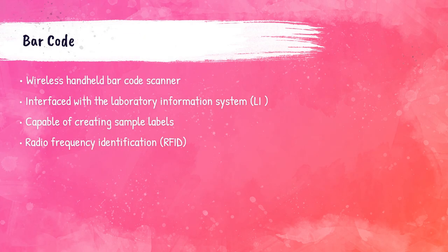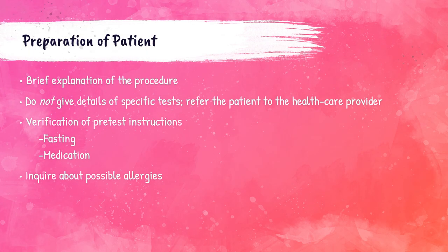Patient wristbands now usually have a barcode that allows the phlebotomist to scan it with a mobile label printer. This interfaces with the laboratory information system to generate a label for each required tube, indicating what type of tubes to collect. Radio frequency identification (RFID) is an automated wireless technology using radio waves to transmit data for identification. RFID allows additional information to be added later, whereas a barcode must be reprinted if more information is added.